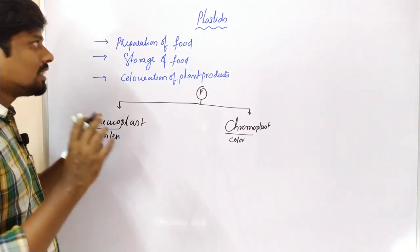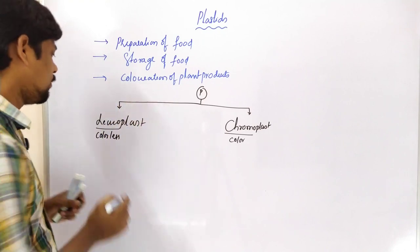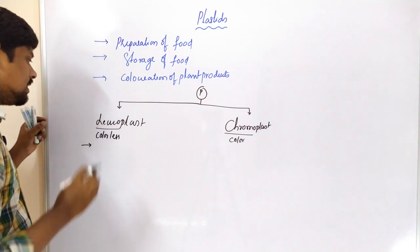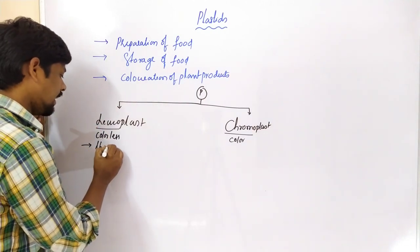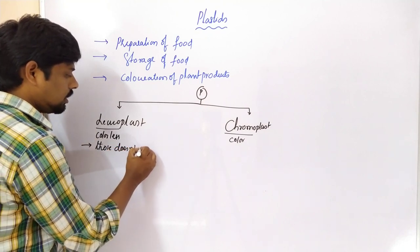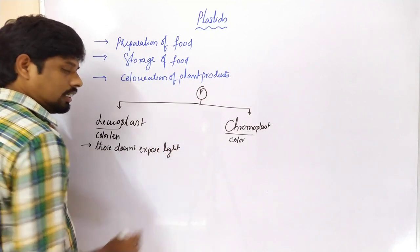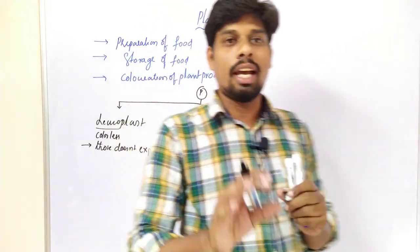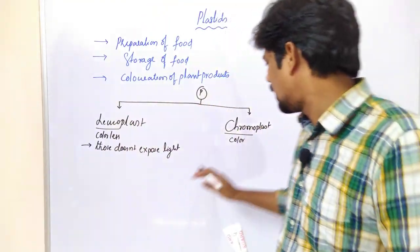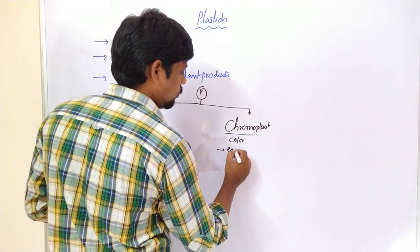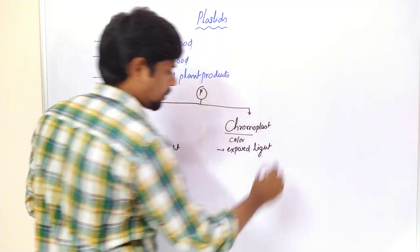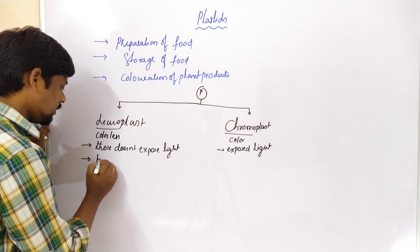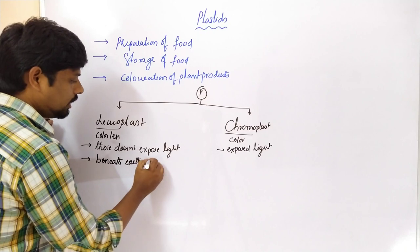Leucoplasts are Plastids present in plant organs that are not exposed to light. If the Plastids are not exposed to light, such Plastids are called Leucoplasts. These Leucoplasts are present beneath the earth or in the soil.